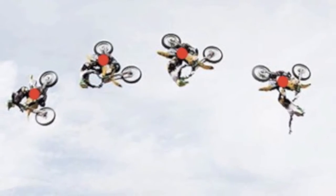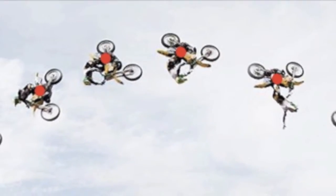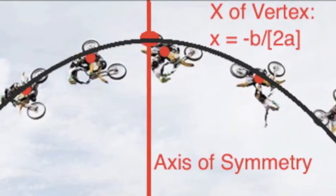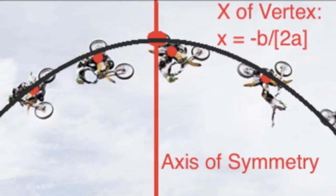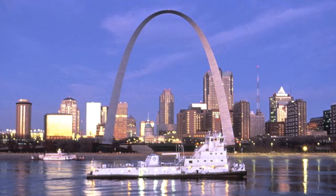I can graph a parabola, start with negative b over 2a. I can graph a parabola, start with negative b over 2a.